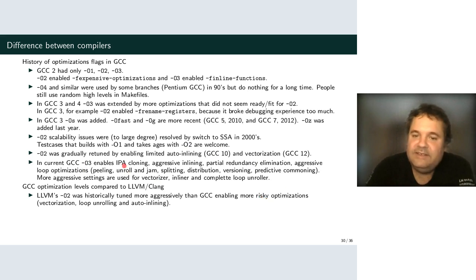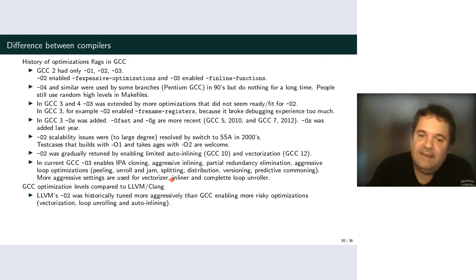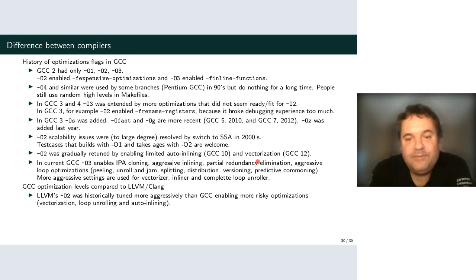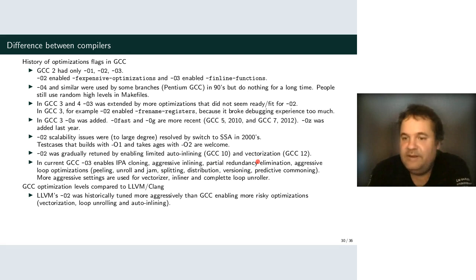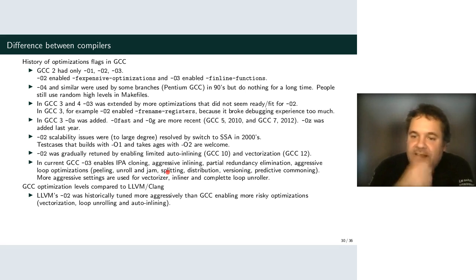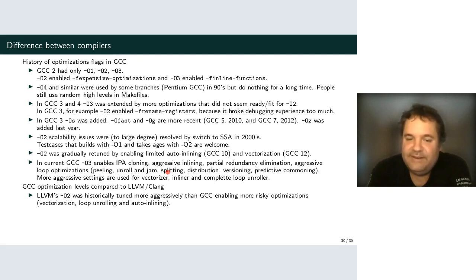Here's the list of things O3 gets you today: extra inlining, cloning, partial redundancy elimination, and loop optimizations. The interprocedural optimizations consume a lot of code size and the heuristics can't be done completely reliably. The loop optimizations have the problem that heuristics are hard to tune for every scenario — they might or might not improve code, but when they do they improve it a lot.